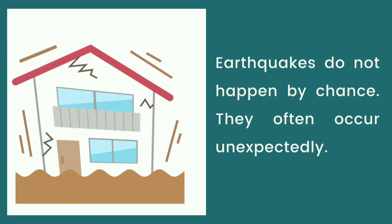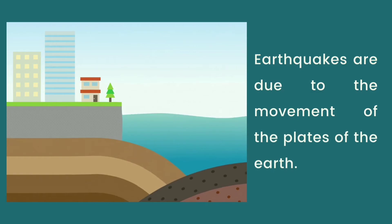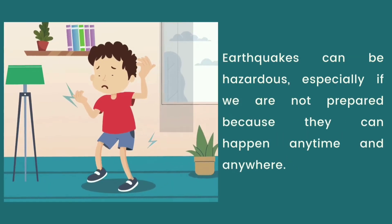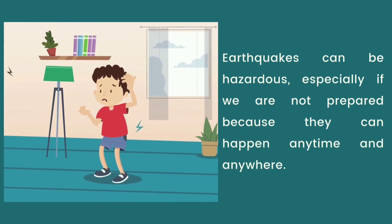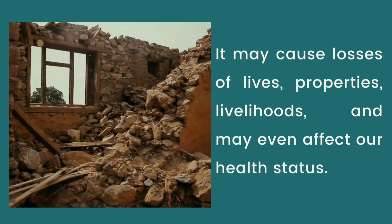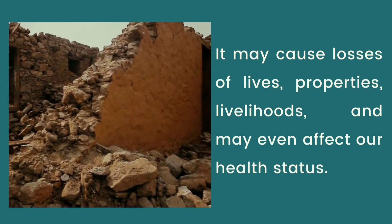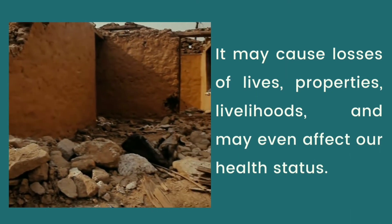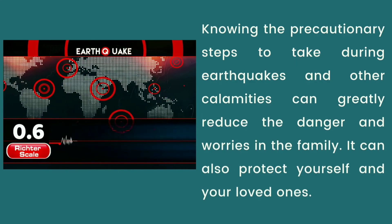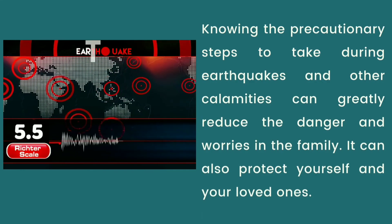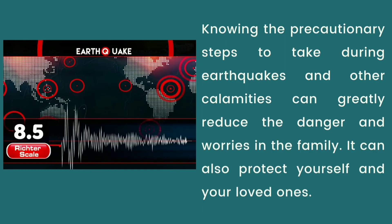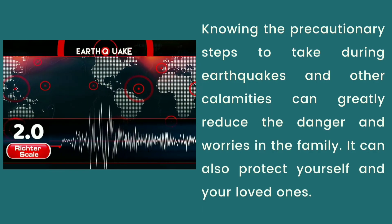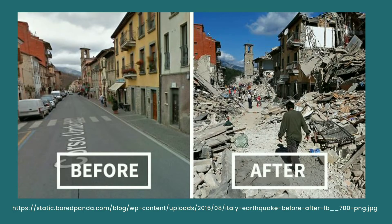Earthquakes often occur unexpectedly. They are due to the movement of the plates of the earth. Earthquakes can be hazardous, especially if we are not prepared, because they can happen anytime and anywhere. They may cause losses of lives, properties, livelihoods, and may even affect our health status. Knowing the precautionary steps to take during earthquakes and other calamities can greatly reduce the danger and worries in the family. It can also protect yourself and your loved ones. Take note of the changes that occur before and after an earthquake in this picture.